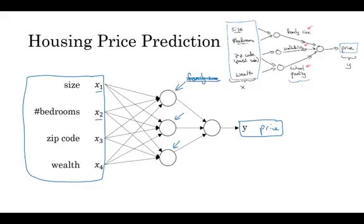So we say that the layers, that is this input layer and this layer in the middle of the neural network are densely connected, because every input feature is connected to every one of these circles in the middle. And the remarkable thing about neural networks is that given enough data about x and y, given enough training examples with both x and y, neural networks are remarkably good at figuring out functions that accurately map from x to y.